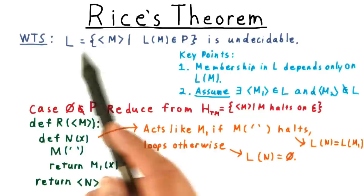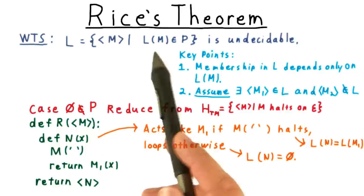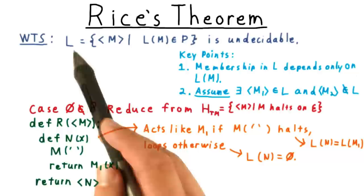In the other case, the language of N is the empty string, meaning that it's not in L. And a decider for L can thus tell the difference, and tell us whether M halted on the empty string or not.